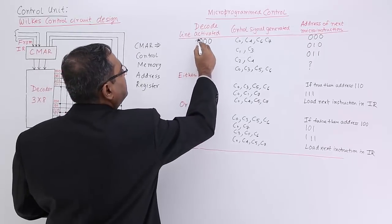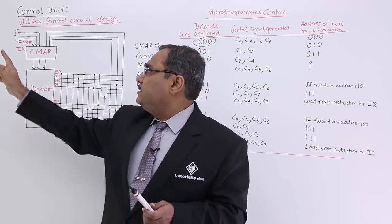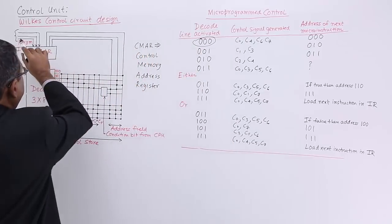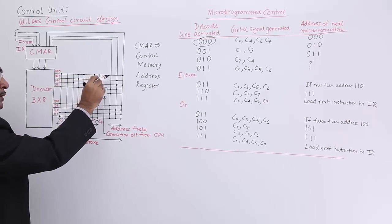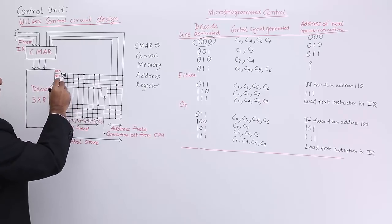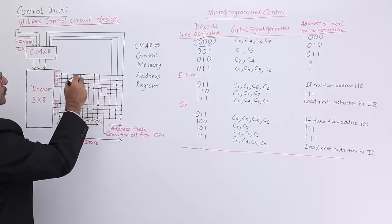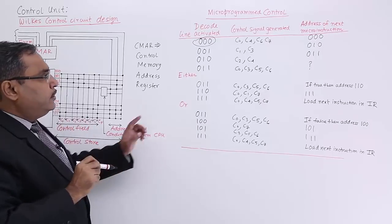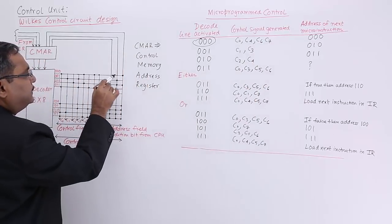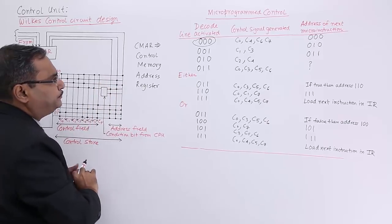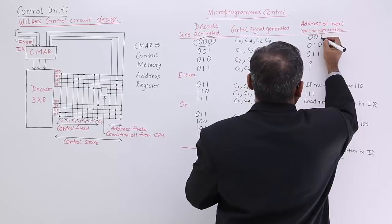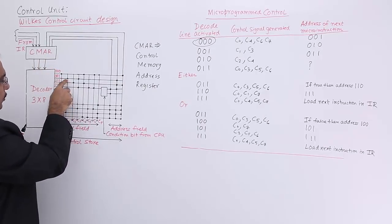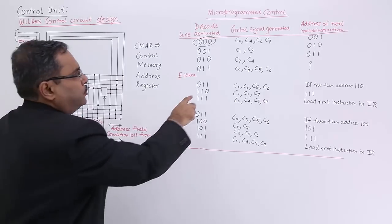Let us suppose the instruction register is supplying the instruction with the bit combination 0 0 0. If 0 0 0 comes here, then this line will get enabled. The control signals getting generated are C0, C4, C6, and C7. The return address in that case is 0 0 1. So 0 0 1 will come down — it will produce the control signals C1 and C3. The return address is then 0 1 0.